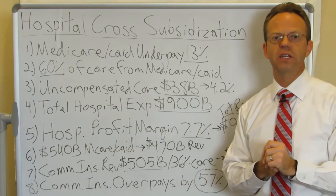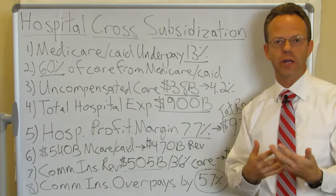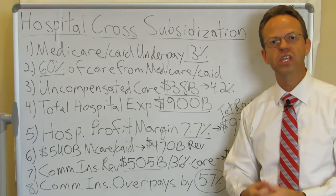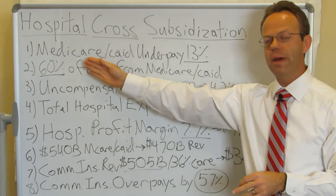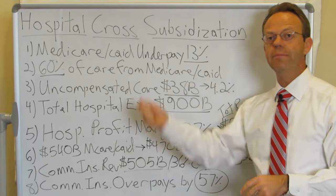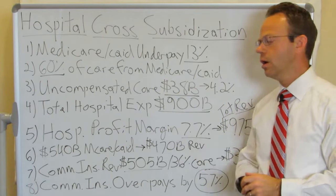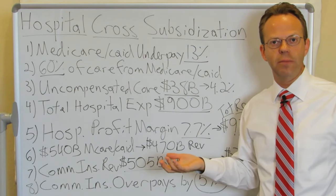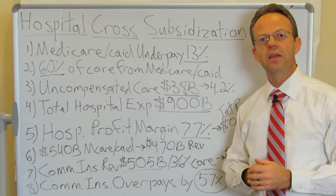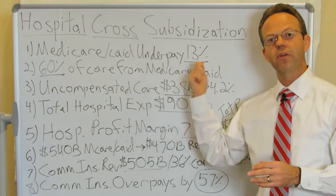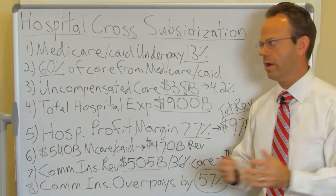These statistics are actually from the American Hospital Association themselves. Medicare and Medicaid underpay by 13%. How much care is actually provided by Medicare and Medicaid? Total hospital expense: 60% came from Medicare and Medicaid patients. So 60% of hospitals' total business is from Medicare and Medicaid.